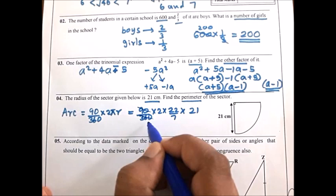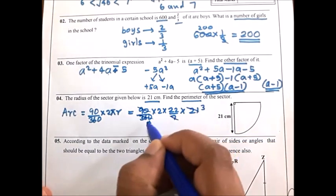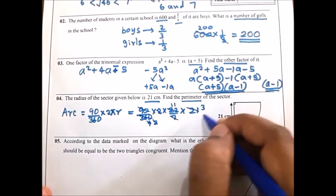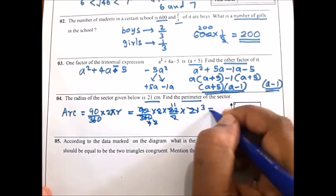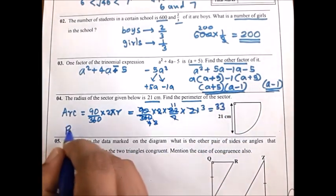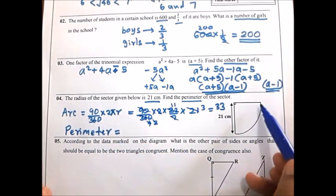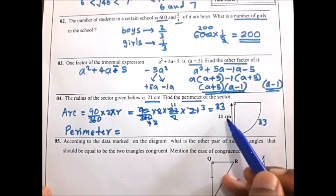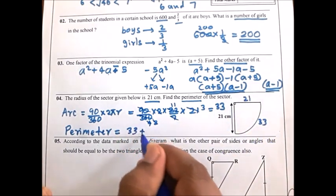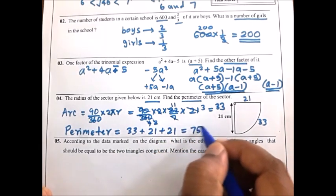Cancel the appropriate terms: 7 and 21 give 3; 2 and 4 give 2; 2 and 22 give 11. So 11 multiplied by 3 gives arc length 33 centimeters. Then the perimeter is arc length 33 plus 21 plus 21, which equals 75 centimeters.